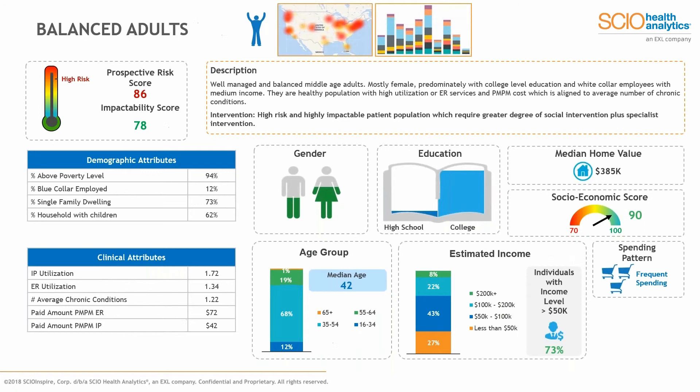What this looks like for balance adults — I jokingly love to use this example because it's always the smallest number of patients in the US; there's not many of us balance adults out there. But looking at a balance adult perspective, risk and impactability score are high. Socioeconomic demographics: predominantly female, college-degreed, median age 42, sitting in that 50 to 100k level in terms of spending.